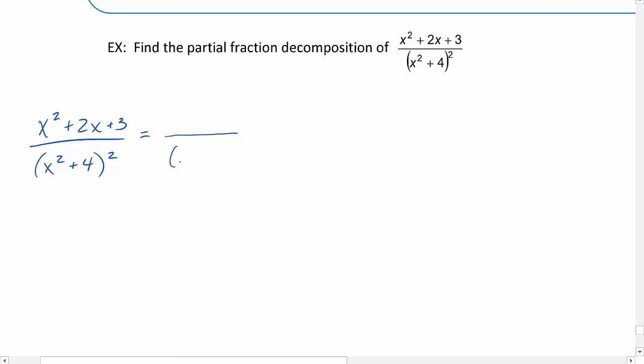The first one is going to be x squared plus 4 raised to the first, and then the second one is going to be x squared plus 4 raised to the second. Our denominators are quadratic, so our numerators have to be linear.